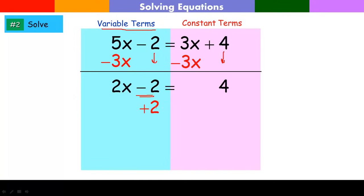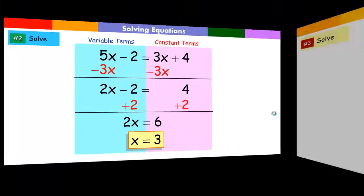Add 2 to this side. If I do it here, of course have to do it here. Our last step is to get x alone. I divide by 2.